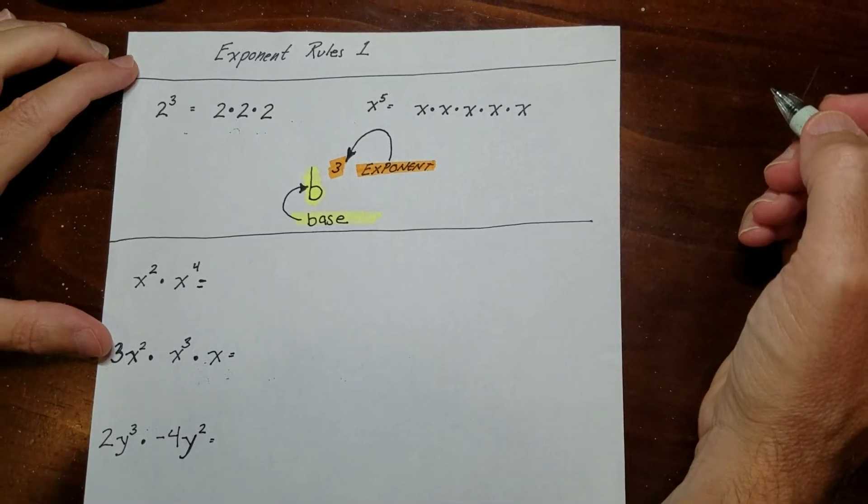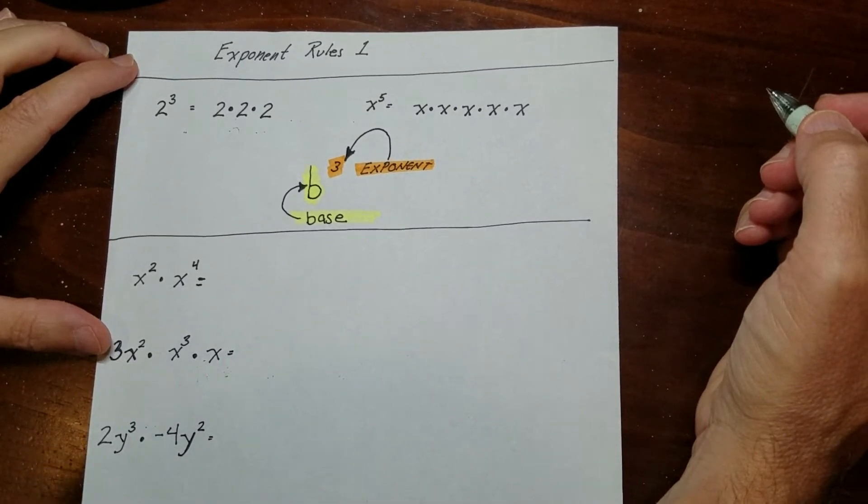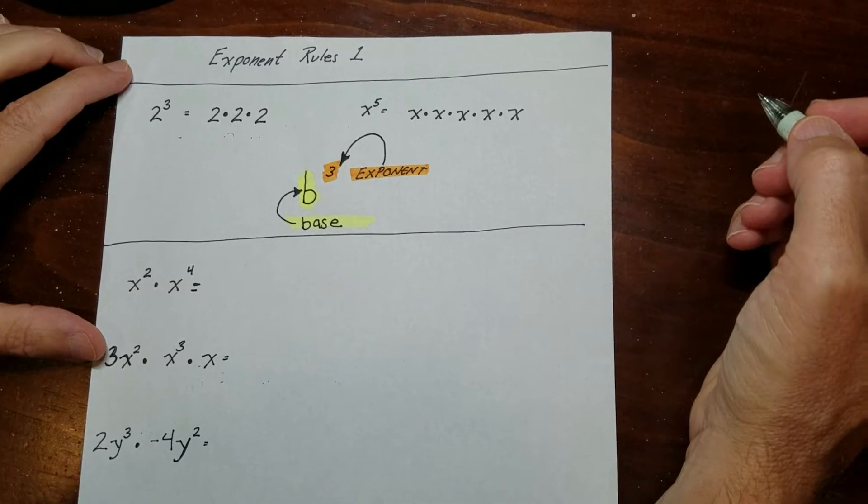So this is exponents rules 1. We're going to talk about how to just multiply exponents if they have the same base.